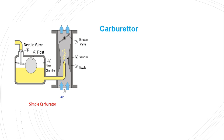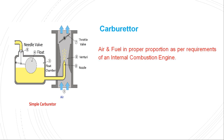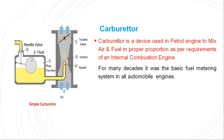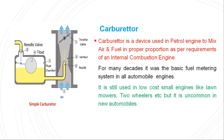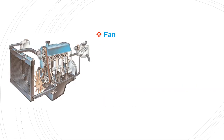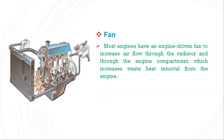The carburetor is a device in which petrol and air are mixed inside a chamber and supplied to the petrol engine. It mixes air and fuel in a proper proportion as per the requirements of an internal combustion engine. For many decades it was the basic fuel metering system in all automobile engines, but nowadays it is still used in low-cost small engines like lawn mowers and two-wheelers, and is uncommon in new automobiles.